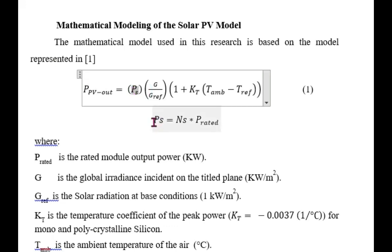Ps will be equal to this one. G here is the solar radiation. G reference here is the base condition, for converting the radiation into kilowatt per meter square. In our case, G reference will be 1000, to convert the watt into kilowatt.